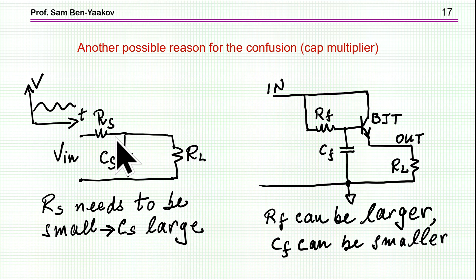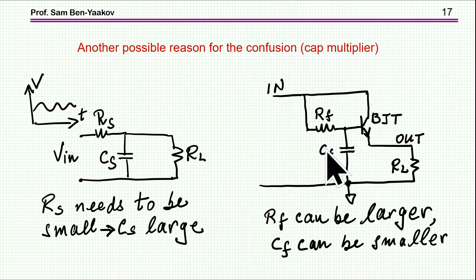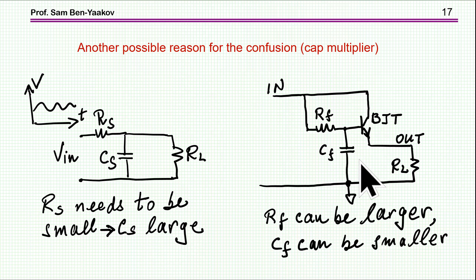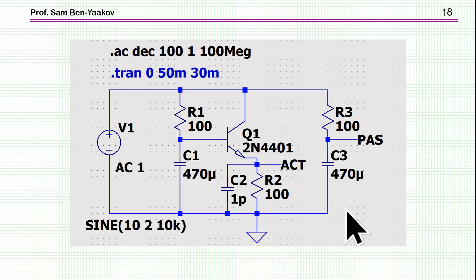The second reason for the confusion: with a purely passive RC filter carrying DC current, you must make the resistor small and compensate with a much larger capacitor. With the BJT filter, DC does not pass through the resistor, so you can use a larger resistor and a smaller capacitor. One might say 'it's as if I had a larger capacitor' — but there is no larger capacitor. Perhaps this is another reason for calling this circuit a capacitance multiplier.